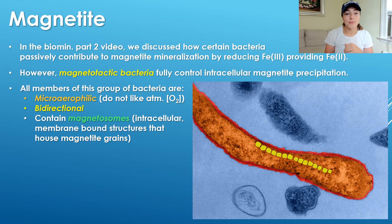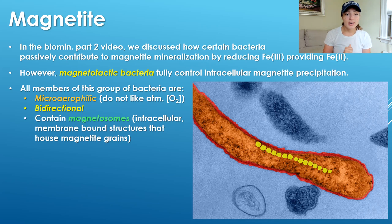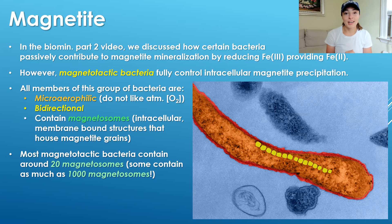All members of this group of bacteria share some similarities. These three main similarities include: they are typically microaerophilic, meaning they only tolerate oxygen concentrations to a certain level — they could not live at atmospheric oxygen concentrations, but they also couldn't live at too low concentrations. They're also typically bidirectional, so they can move in two different directions. And lastly, they contain magnetosomes — intracellular membrane-bound structures that house magnetite grains. Most of these bacteria contain around 20 magnetosomes in their cell, though some contain as many as 1,000.